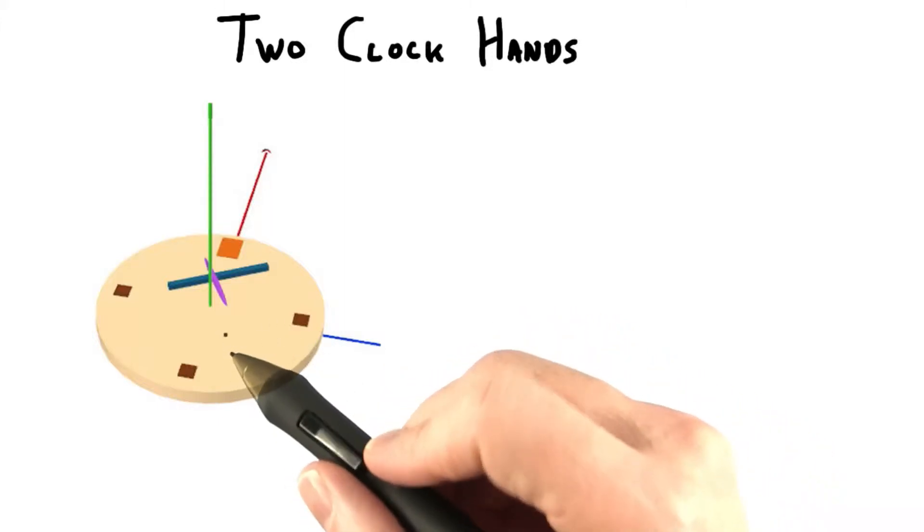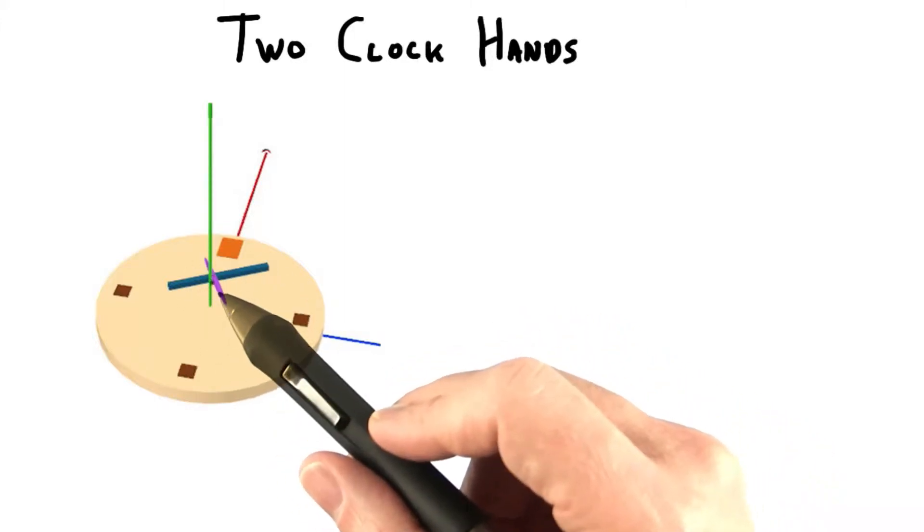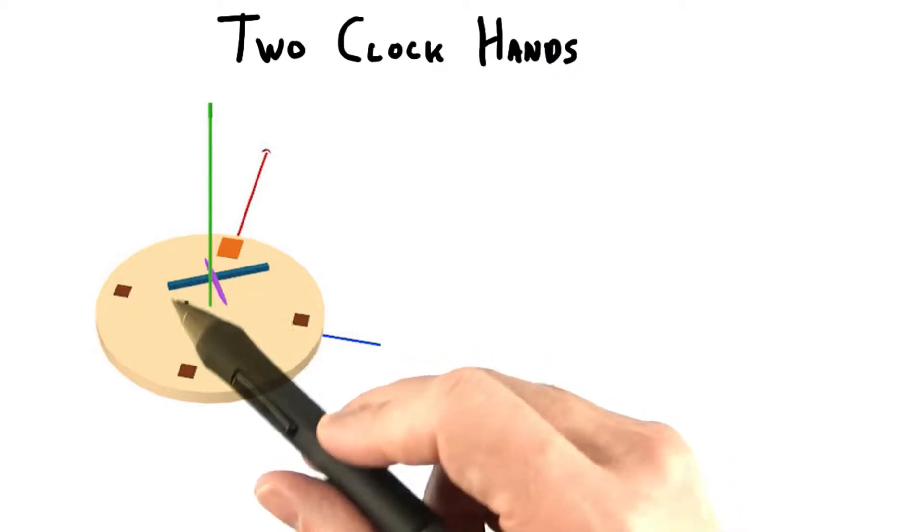If you try to take a box or sphere clock hand from their previous exercises and position it and rotate it, you'll get something like this.